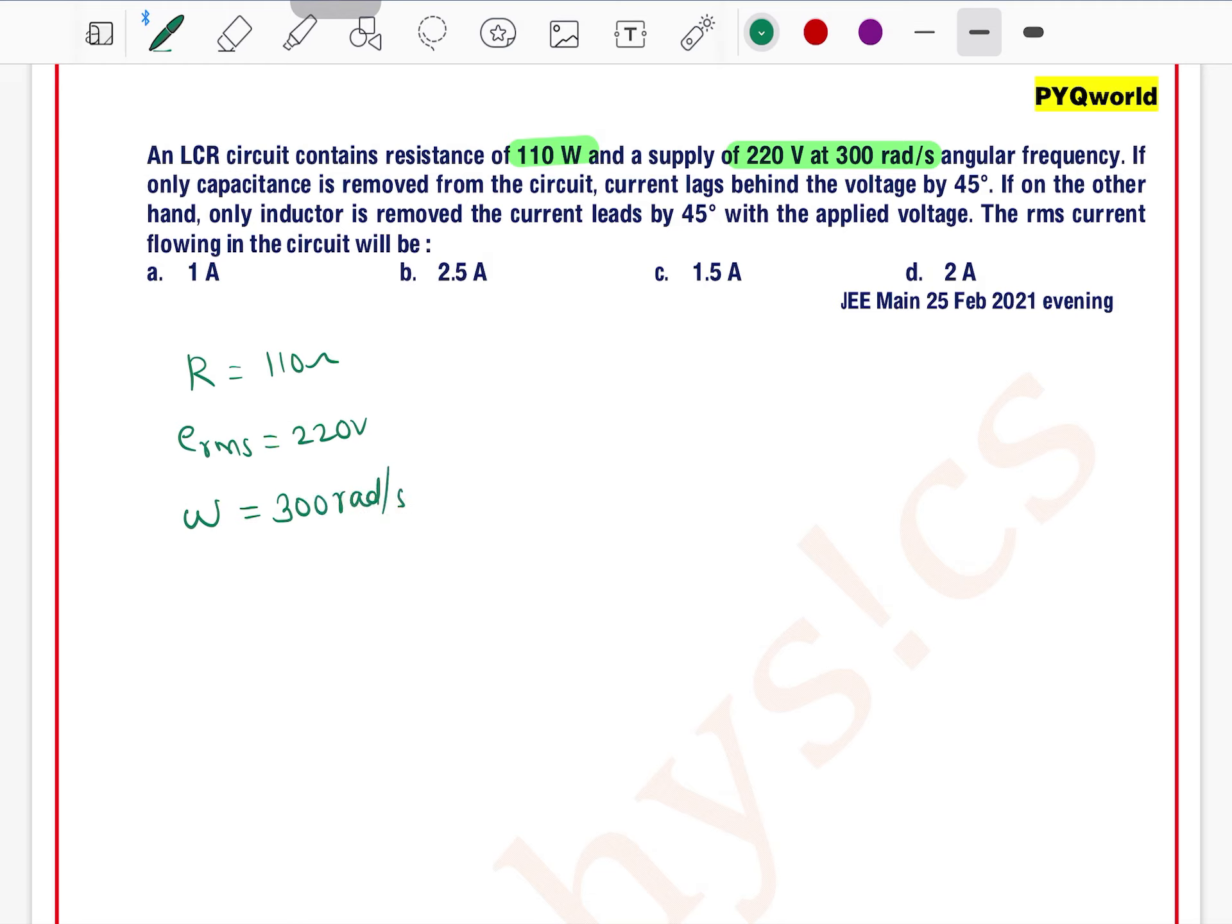If only capacitance is removed from the circuit, current lags behind the voltage by 45 degrees. And if on the other hand, only inductor is removed, the current leads by 45 degrees with the applied voltage. The RMS current flowing in the circuit is, okay.